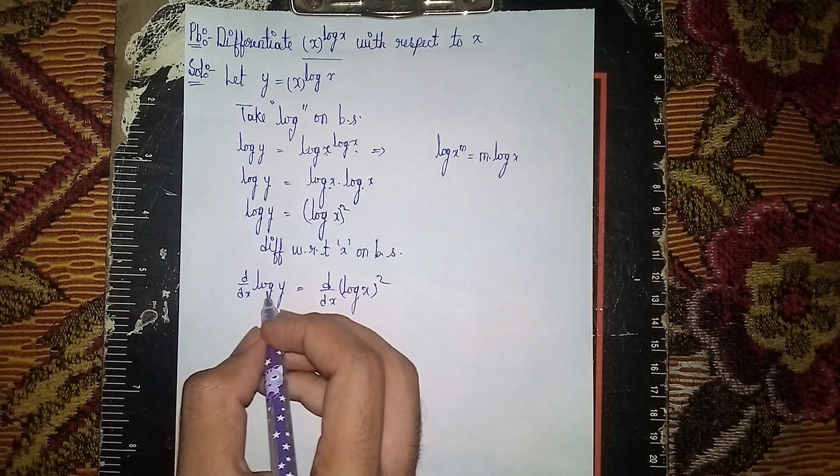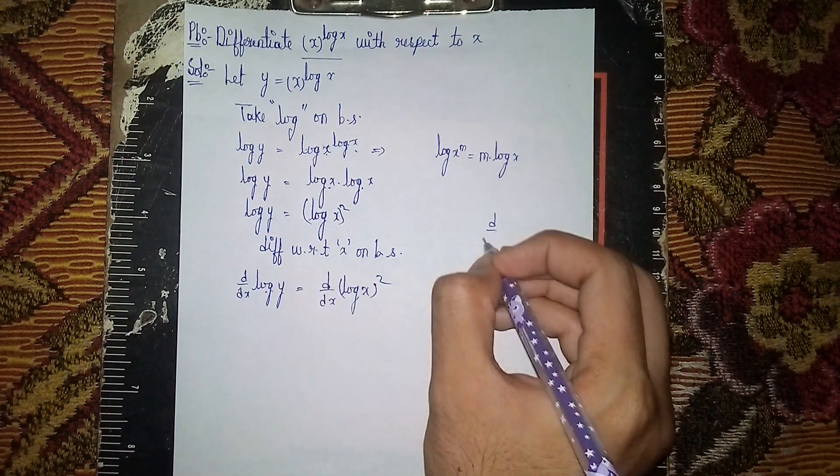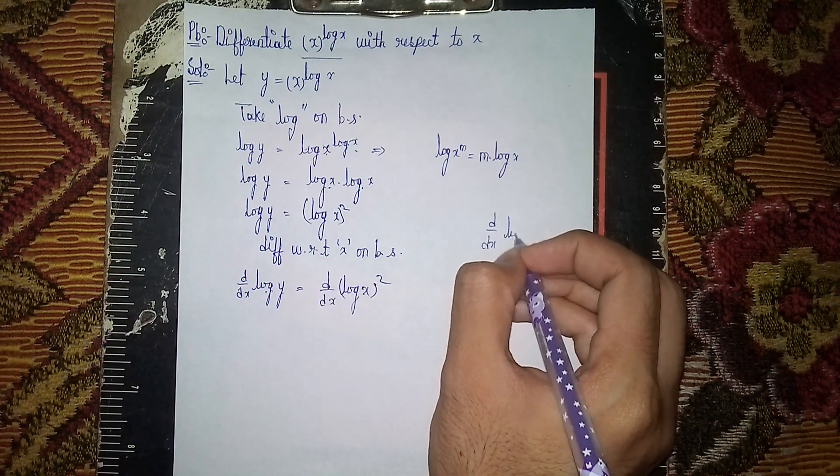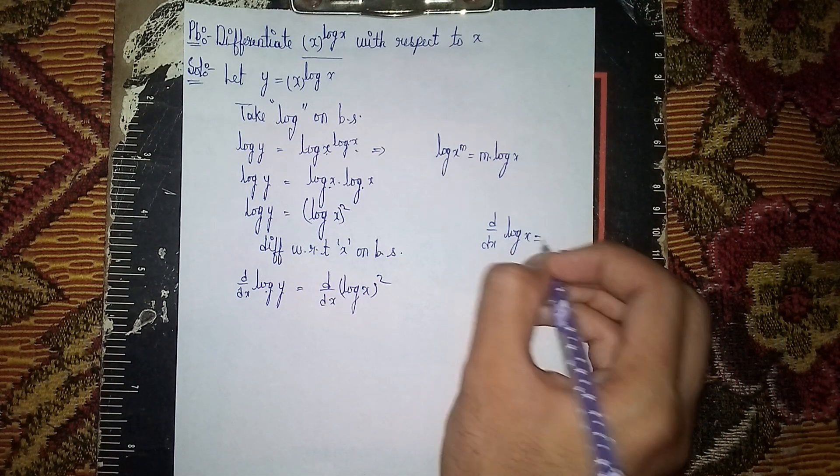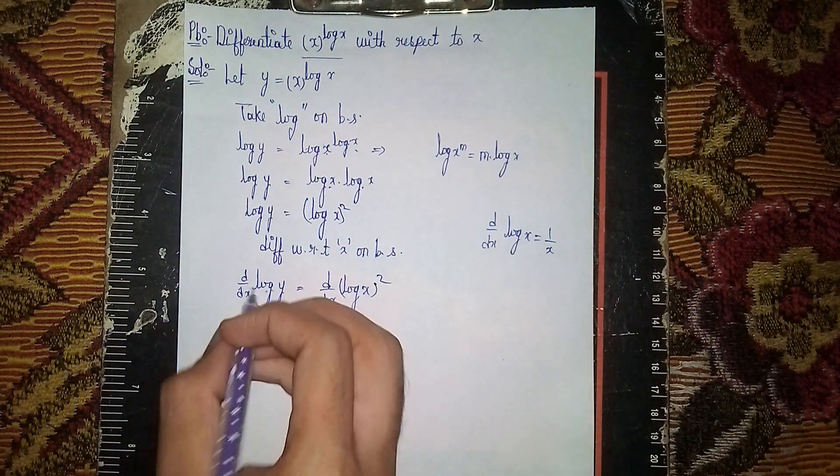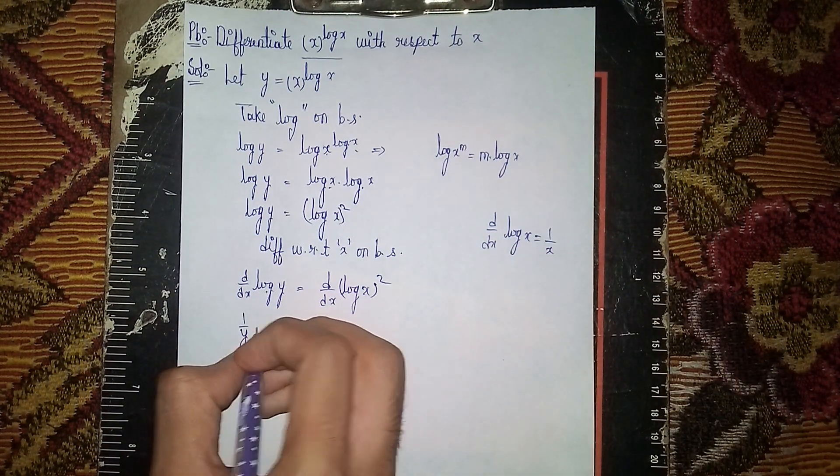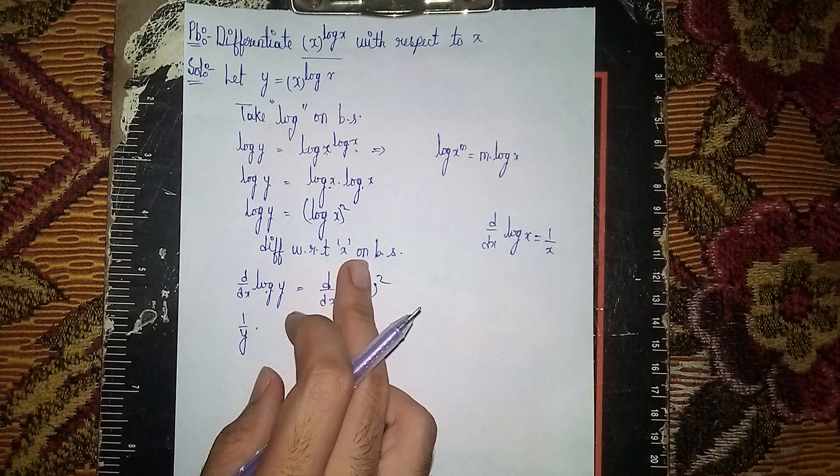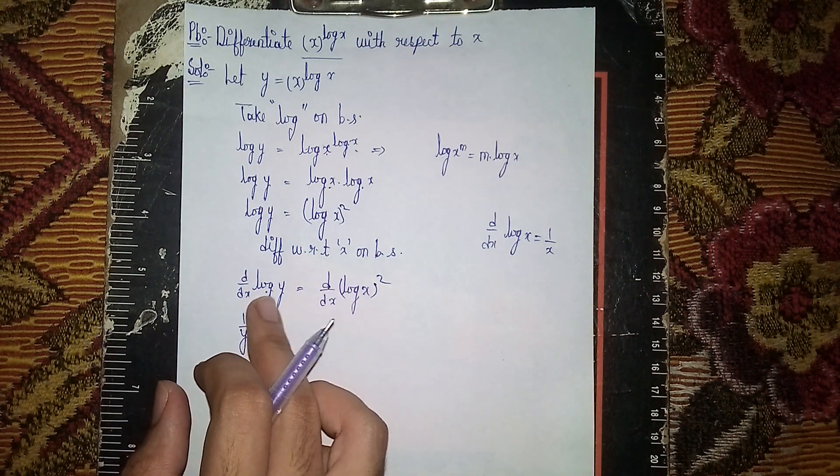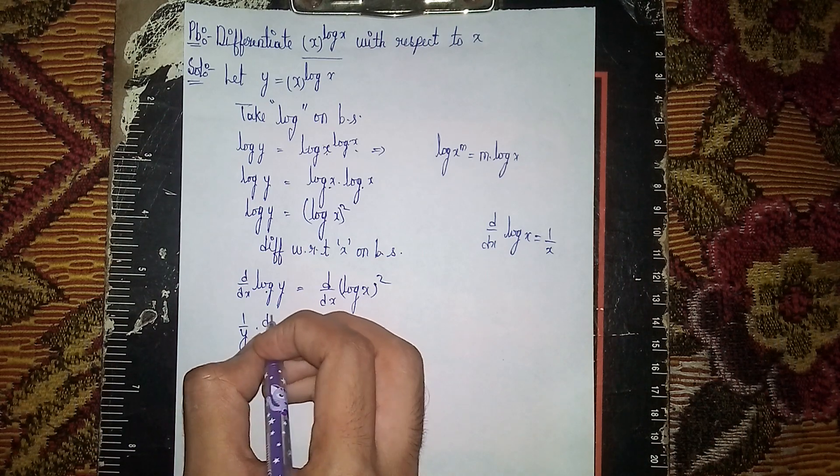The derivative d/dx of log x equals 1/x. So the left side becomes (1/y) times dy/dx.